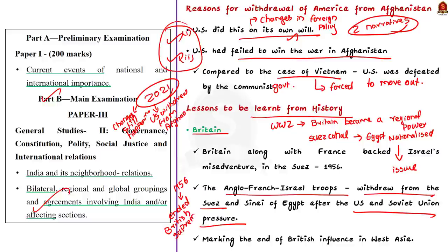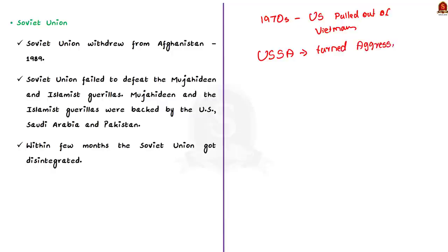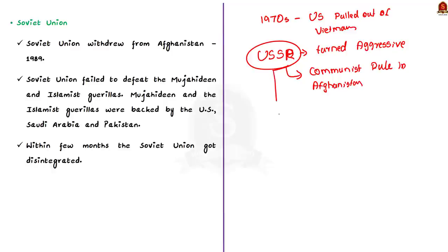The second example relates to the former Soviet Union. The United States pulled out its troops from Vietnam in the 1970s after suffering a defeat. The Soviet Union viewed this as a sign of Western weakness and decided to aggressively pursue its goals. In 1978, when Afghan communists asked for help, the Soviet Union actively supported them and helped establish communist rule in Afghanistan. Later, to place a Soviet ally in power, Soviet troops were sent. Finally in 1989, the Soviet Union withdrew its troops, accepting defeat to the Mujahideen and Islamist guerrillas backed by the United States, Saudi Arabia and Pakistan. Two years later, the Soviet Union collapsed. This is why Afghanistan is famously called the Graveyard of Empires.